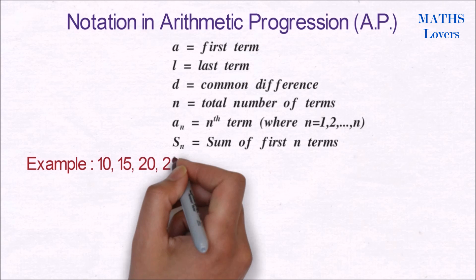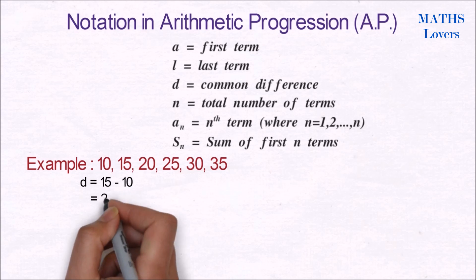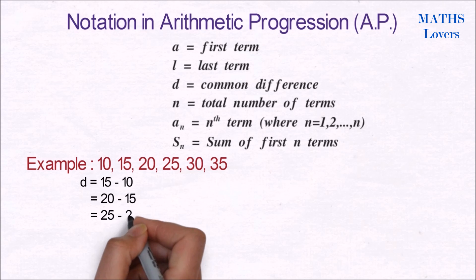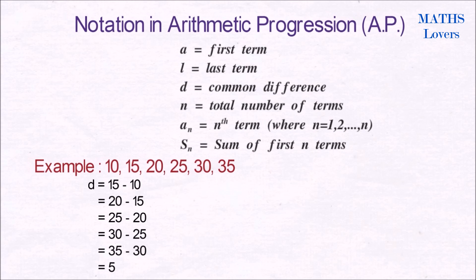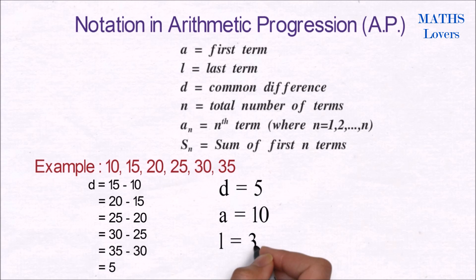Let's understand it with an example. Here we can see that the difference between every two consecutive terms is 5. That's why this is an arithmetic progression, where common difference d equals 5, first term a equals 10, last term l equals 35, and total number of terms n equals 6.